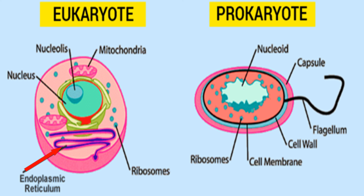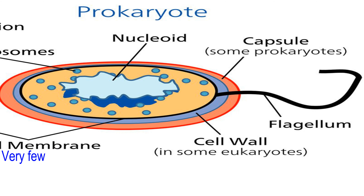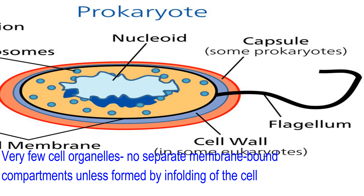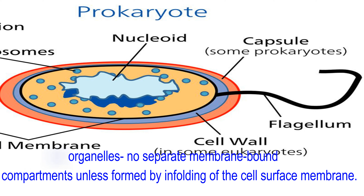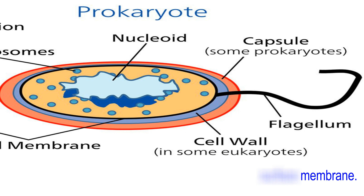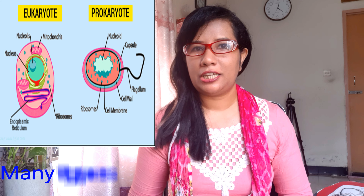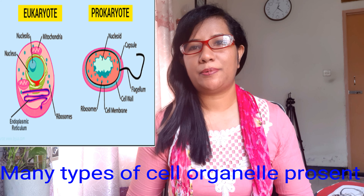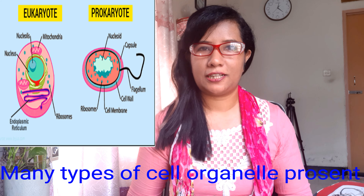Prokaryotic cells have no endoplasmic reticulum present. Eukaryotic cells do have endoplasmic reticulum present. Prokaryotic cells have very few organelles and no separate membrane-bound compartments, unless formed by infolding of the cell surface membrane.